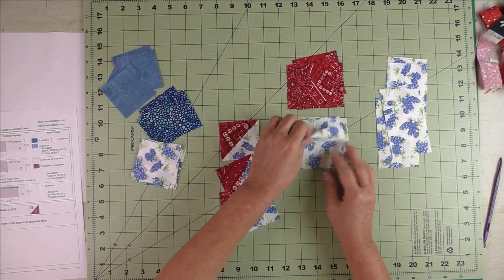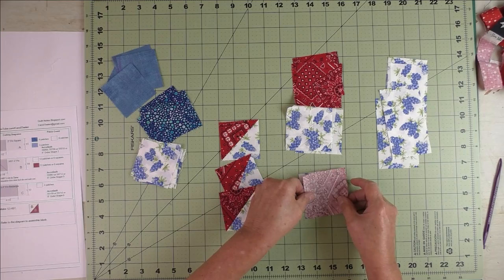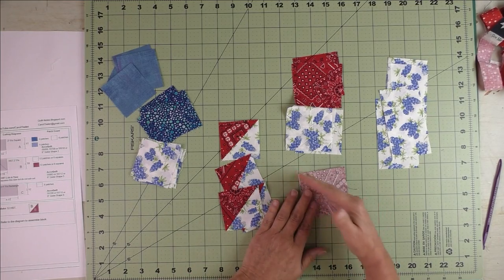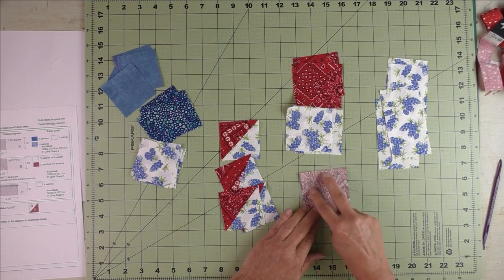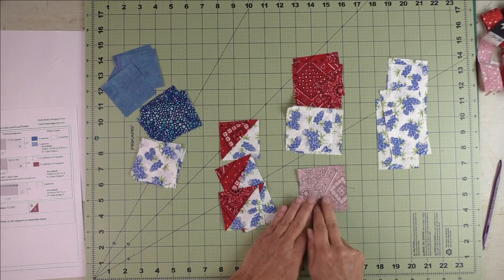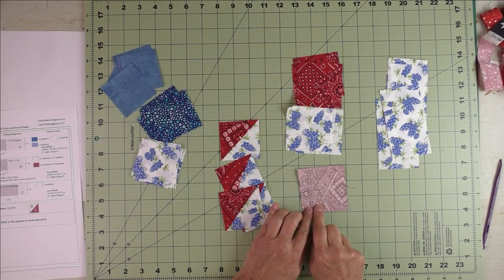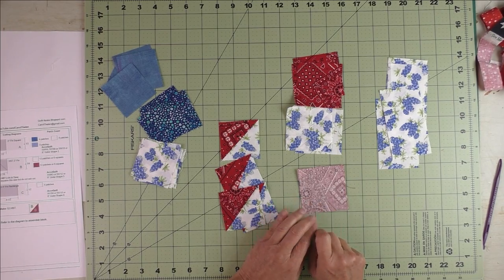The first thing we're going to do is make our half square triangles, and we're going to use the method of two at a time where we take the dark and the light fabric, put them together, draw a diagonal line and make two stitches, then cut them apart. If you're not familiar with this method, stay tuned for a short tutorial that shows you how to do this.